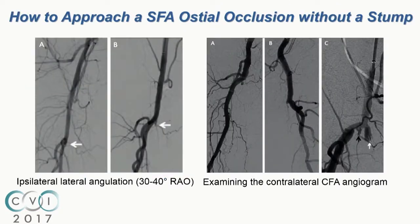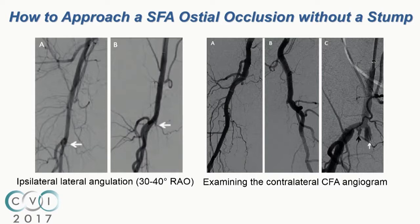Here are a few examples. In an AP or PA view, the SFA may appear to have no nub, but with ipsilateral lateral angulation — about 30-40 degrees RAO — the nub suddenly shows up, providing guidance for further management. Additionally, when you cannot define the SFA ostium on one side, taking a picture on the contralateral side can provide a mirror image and guidance, especially if there are grafts implanted medially.